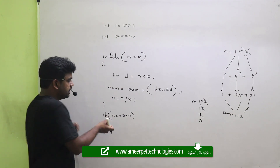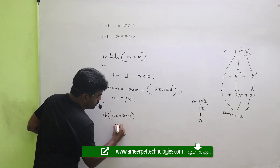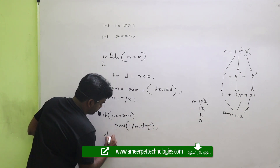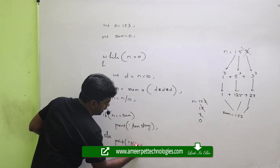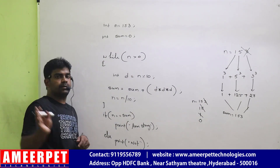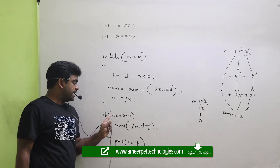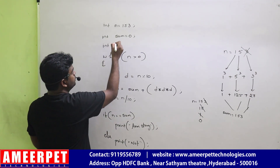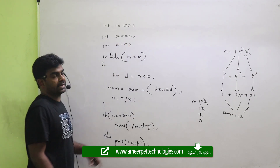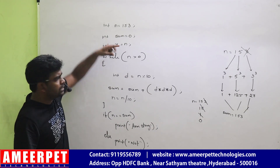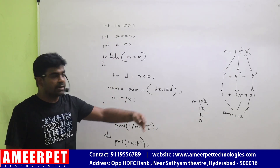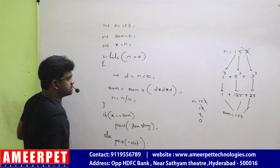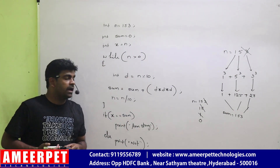So then how to do it? It is very simple. Before modifying the n value, just take that n value into another variable, x. Now x value is 153. Then you can modify n — no issues. n value becomes 0, but still x value is 153 only. So please compare x with sum. If both are equal, then you can say that it is an Armstrong number.